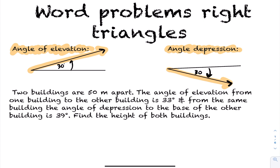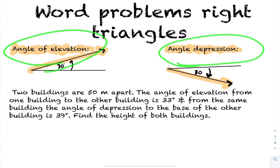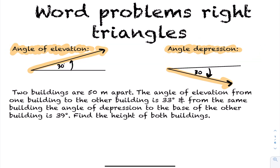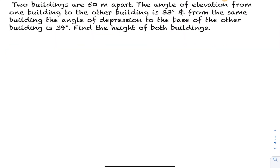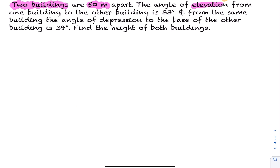You're going to see these terms — angle of depression, angle of elevation — used in these word problems. Let's take a look at our first word problem. We have two buildings that are 50 meters apart. The angle of elevation from one building to the other is 33 degrees, and from the same building, the angle of depression to the base of the other building is 39 degrees. Find the height of both buildings.